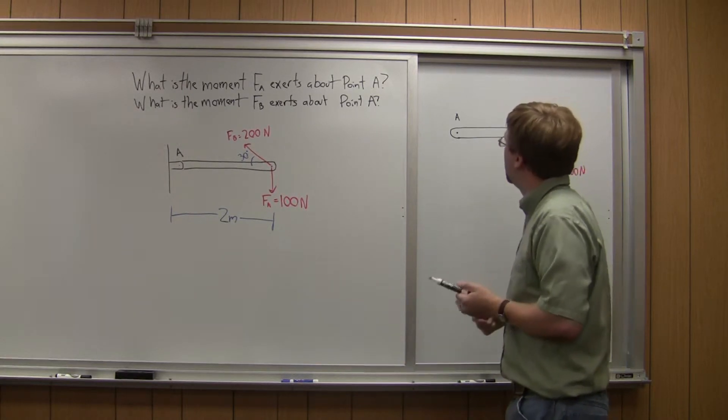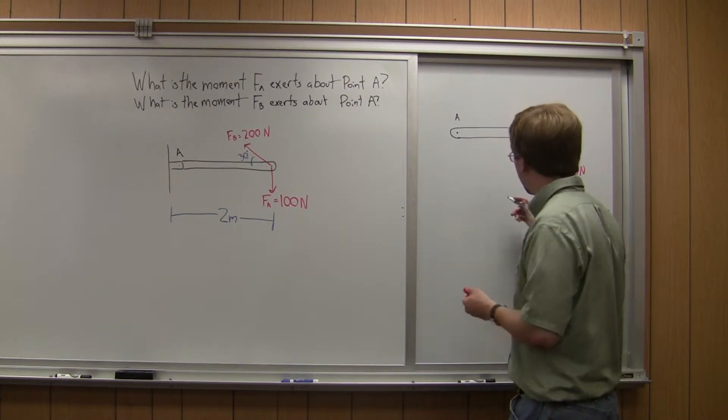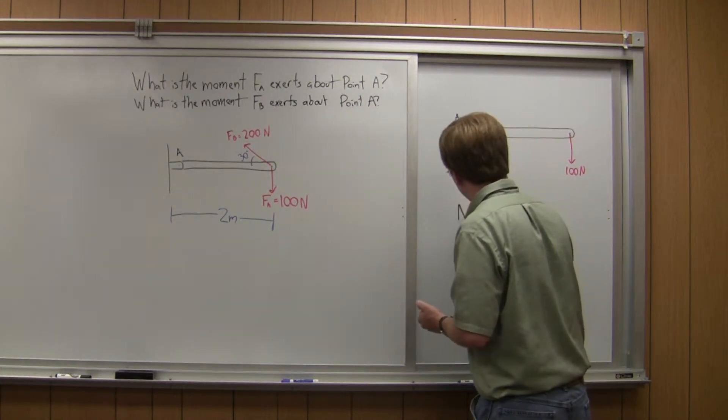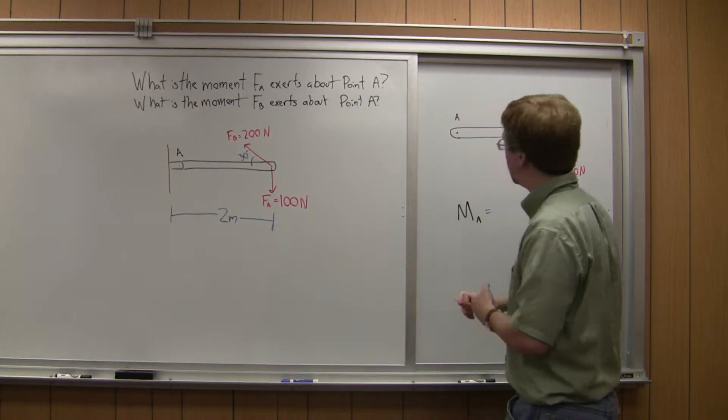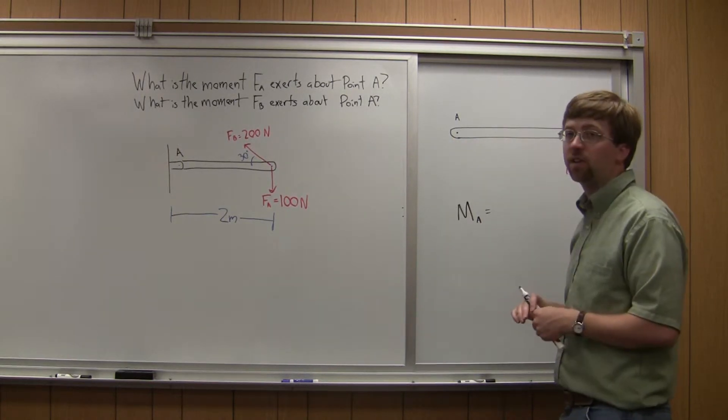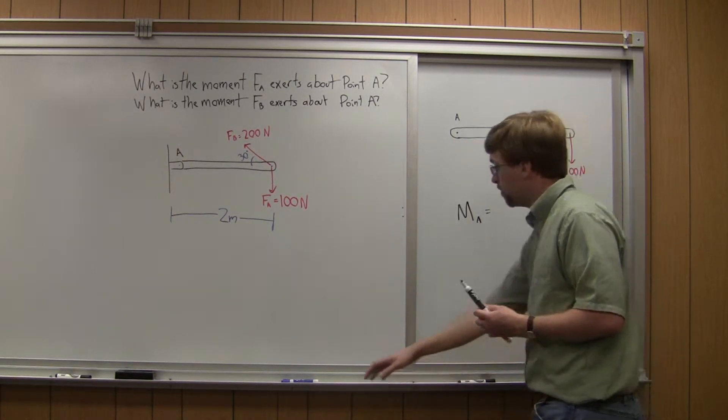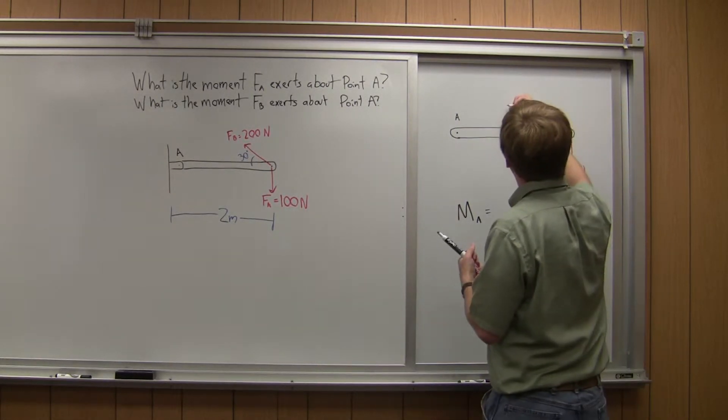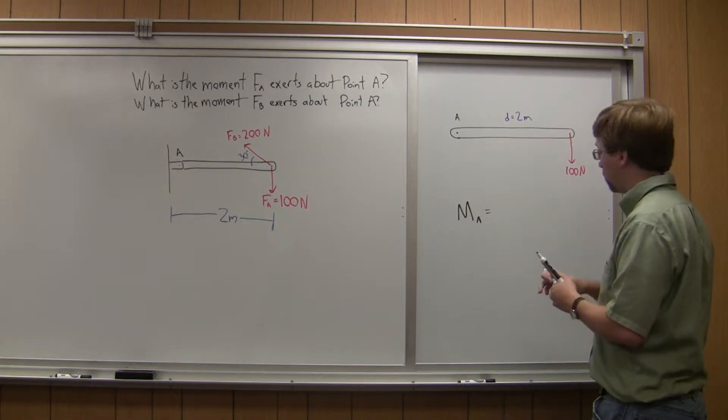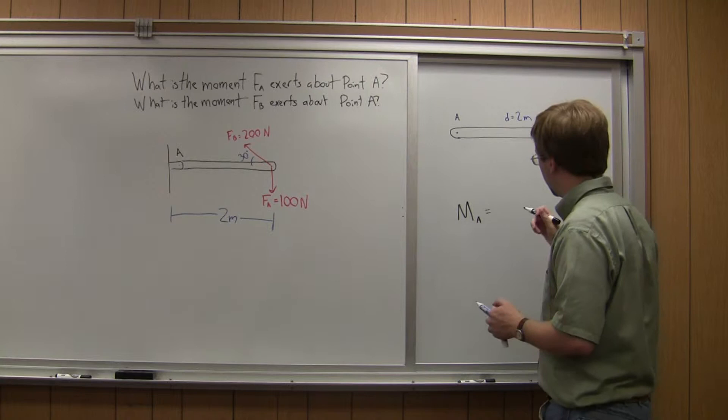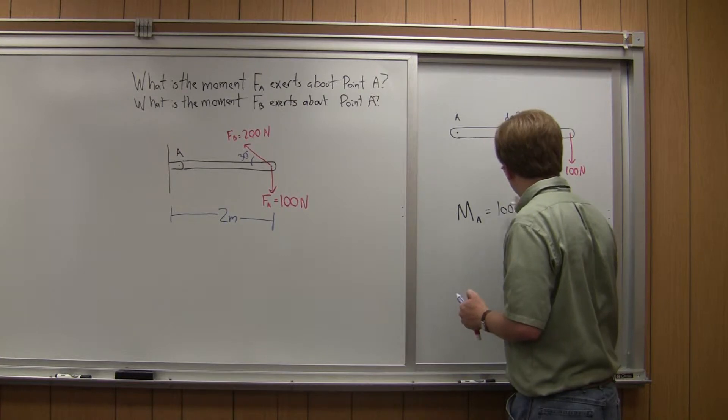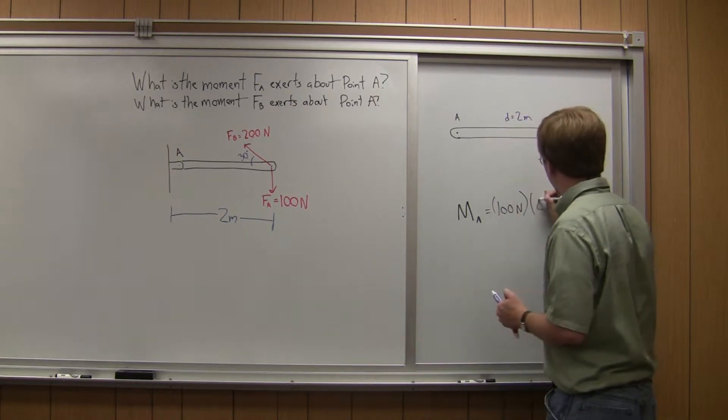So in this case, we're going to basically know that our moment about A is going to be equal to the force times the perpendicular distance between point A and the point of application of this force. So we know that the distance is equal to two meters. We know that the force is 100 newtons. So the MA is going to be 100 newtons times the distance of two meters.